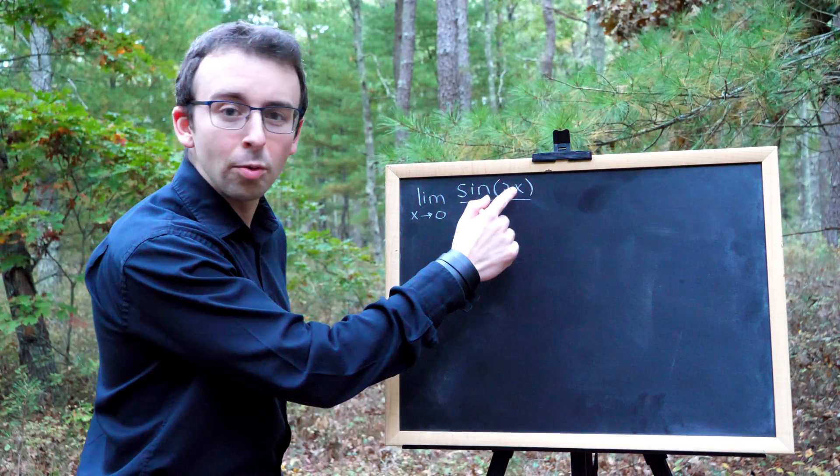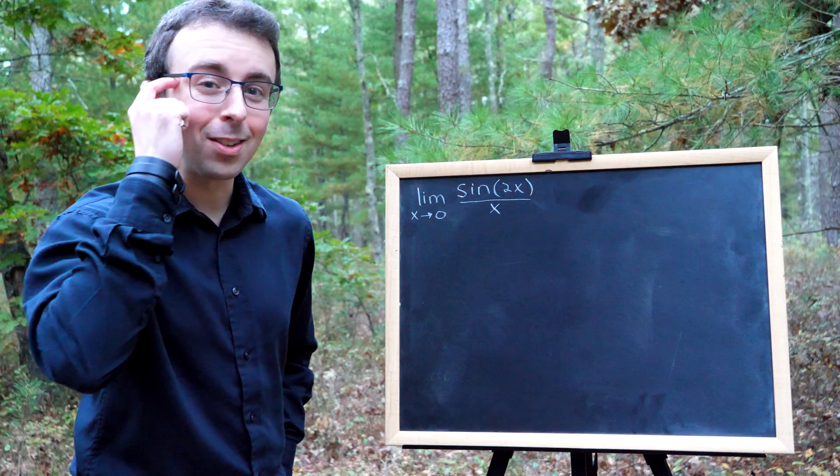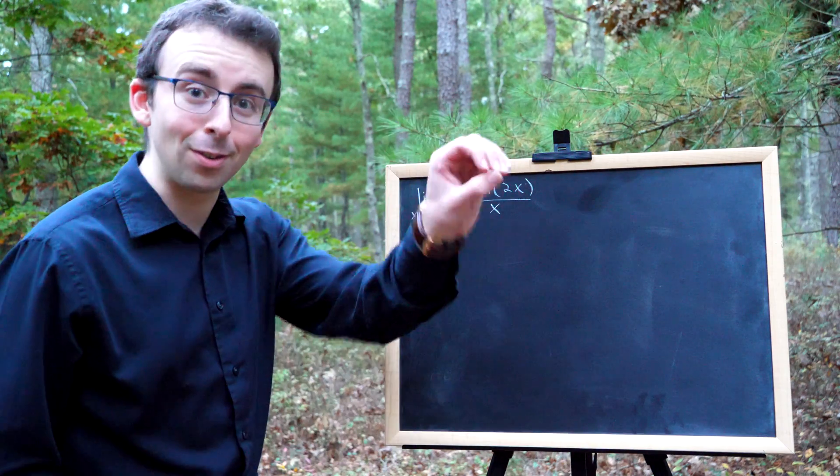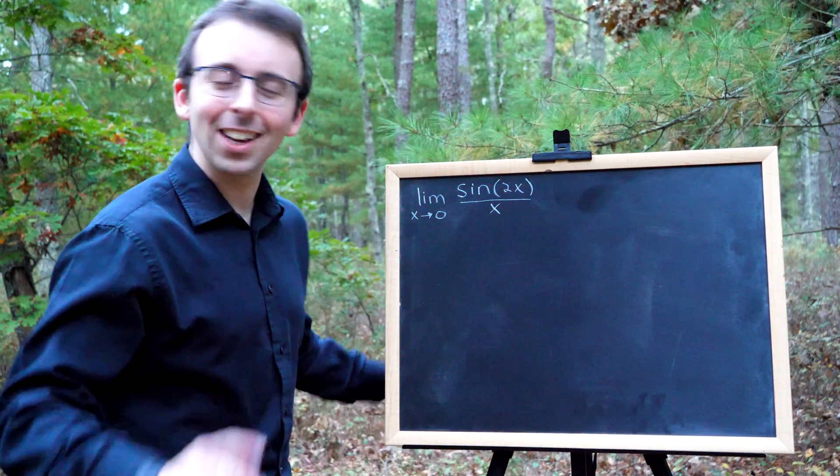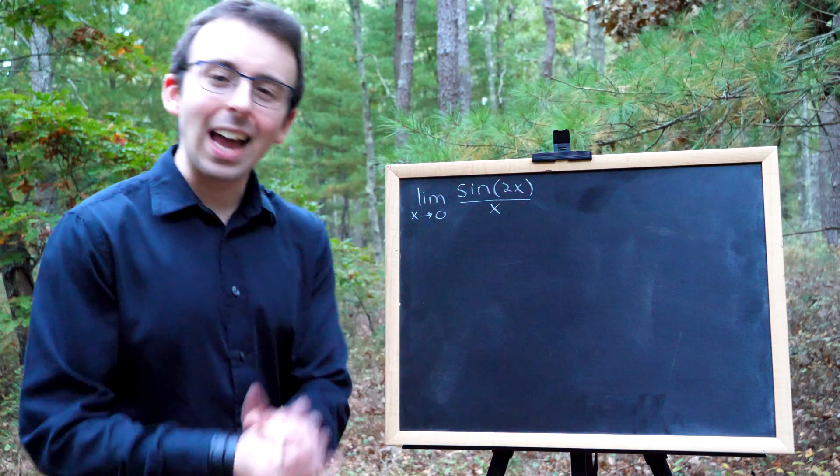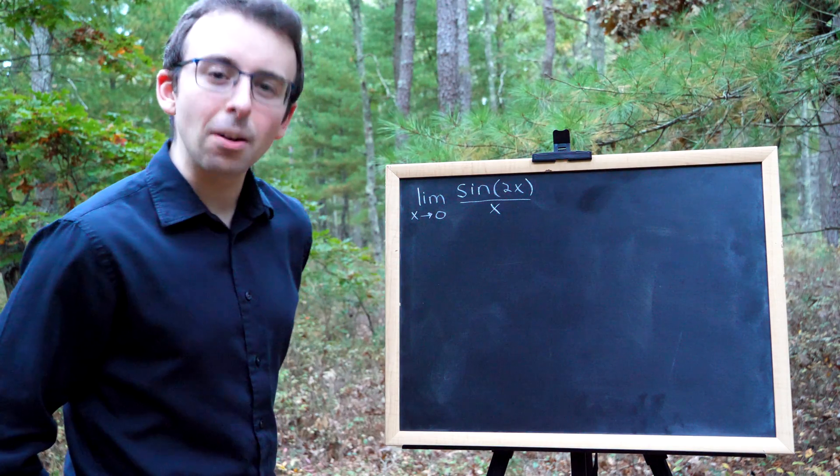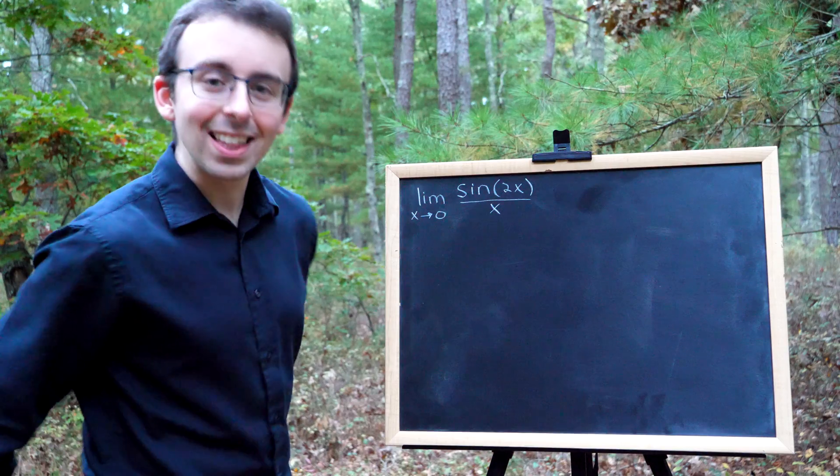Not really. Actually, sine of 2 times 0 is sine of 0, which is 0, and plugging in 0 into the denominator, that's not going to work. It's going to be 0 over 0. We're going to have to be a little bit more sophisticated about our technique for this one.